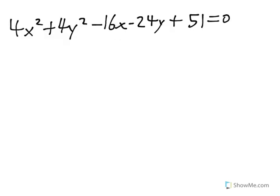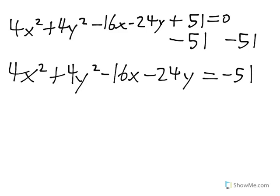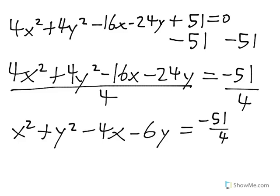First, we must move the value without a variable to the other side, which in this case is 51. Next, divide both sides of the equation by the coefficient attached to the squared variable, which in this case is 4. The coefficient should be the same on both squared variables. Next, group together the x's and y's in the equation.